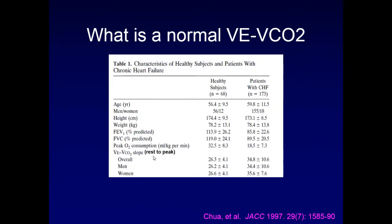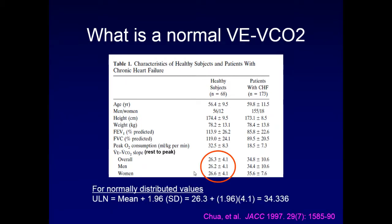A study comparing congestive heart failure patients to healthy subjects looked at VE/VCO2 slope from rest to peak. In 68 healthy subjects, the upper limit of normal using mean plus 1.96 standard deviations gives a value of about 34 — this is where the magical number of 34 on the Excel spreadsheet came from.